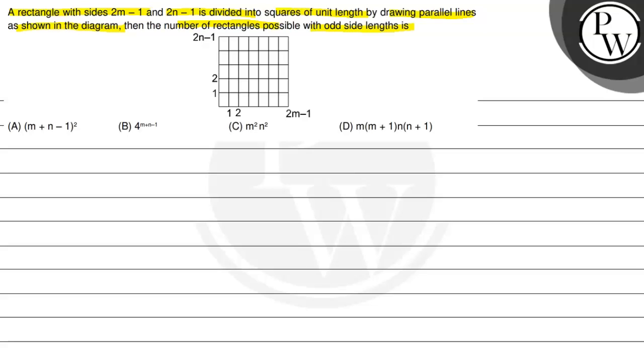At first we discuss the key concept of this problem. The key concept is: sum of odd numbers equals n square. If n number of terms are there, then this is the key concept for this problem.